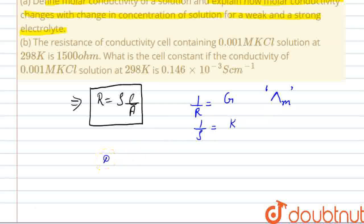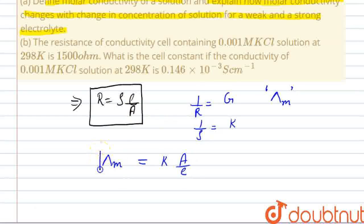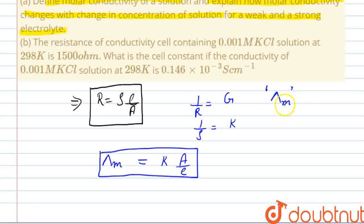Molar conductance λM equals K·A/L. Putting down the values, since 1/R equals G, and expressing in terms of molar conductance with ρ as K, and L/A — its reciprocal is A/L.